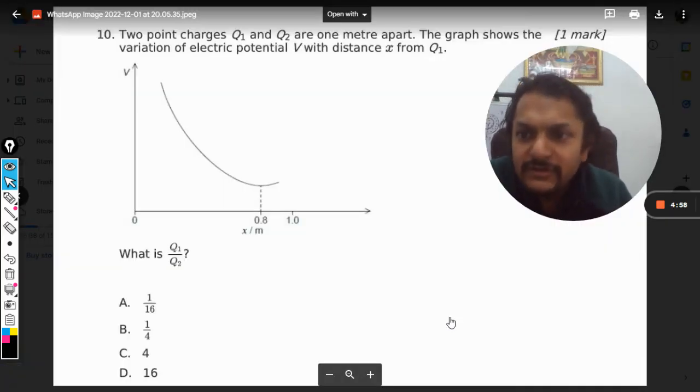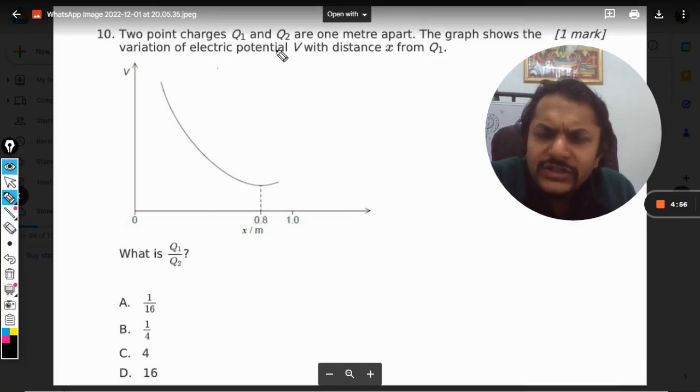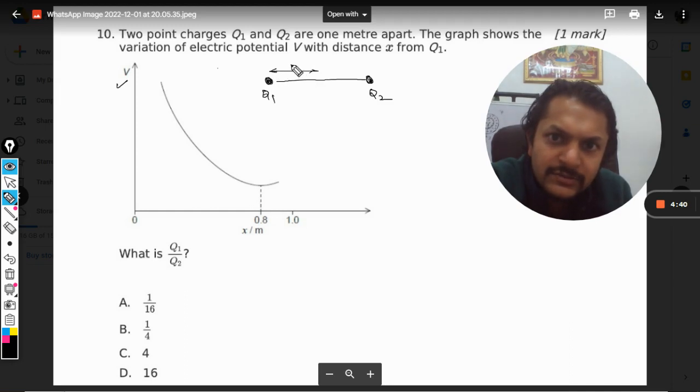Okay dear students, let's see what is in this question. Two point charges Q1 and Q2 are one meter apart. Let's say this is Q1 and this is Q2. The graph shows the variation of electric potential V with distance x from Q1, so this becomes x. This is the graph shown here, the potential is reducing. What is the ratio of Q1 by Q2?